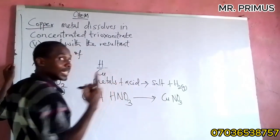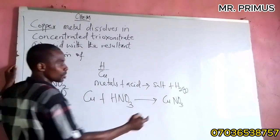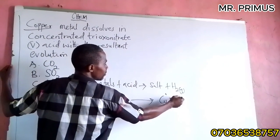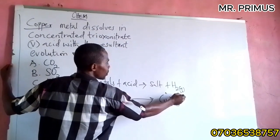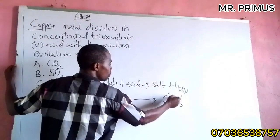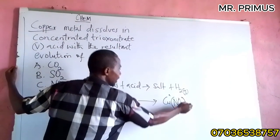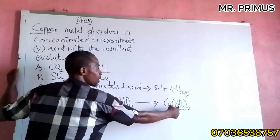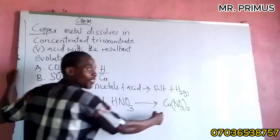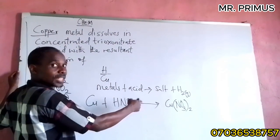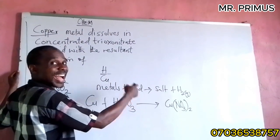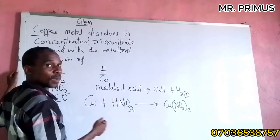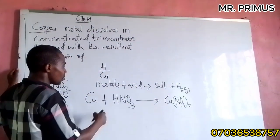Look at it as I taught students: copper is 2, NO₃ has a charge of 1, so we put it in brackets and write 2. This is copper(II) nitrate. This is a salt. I have taught our students — check one of our previous videos.